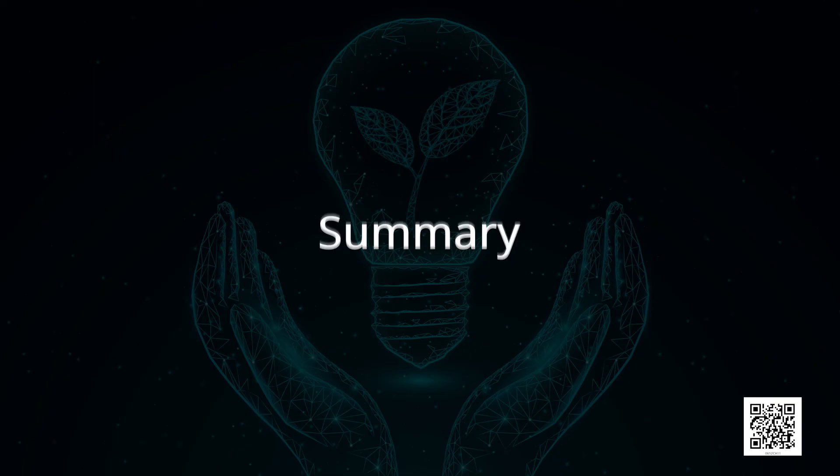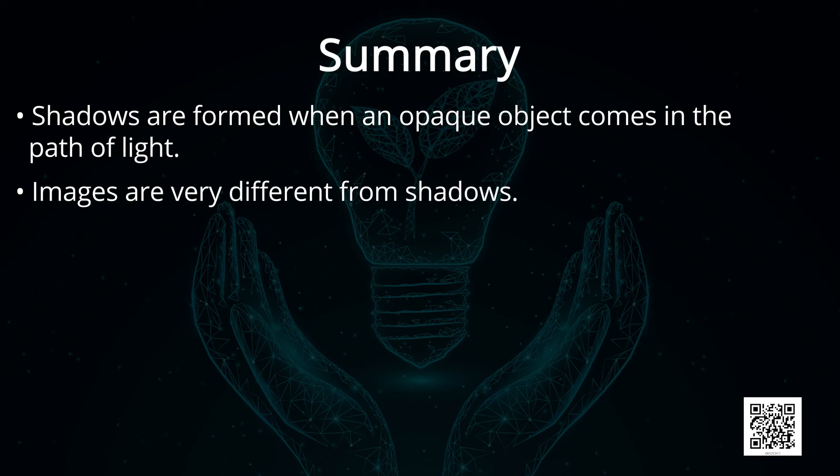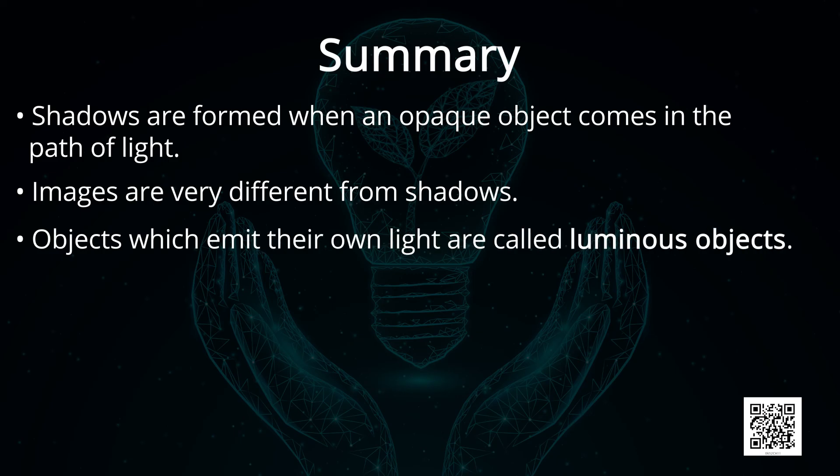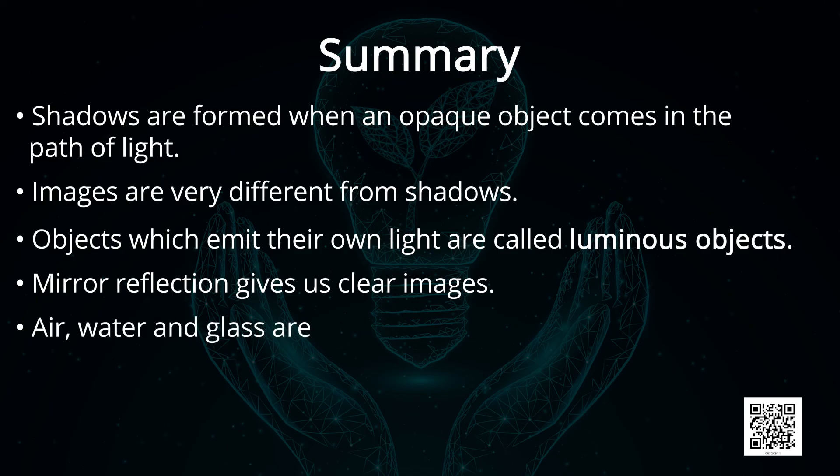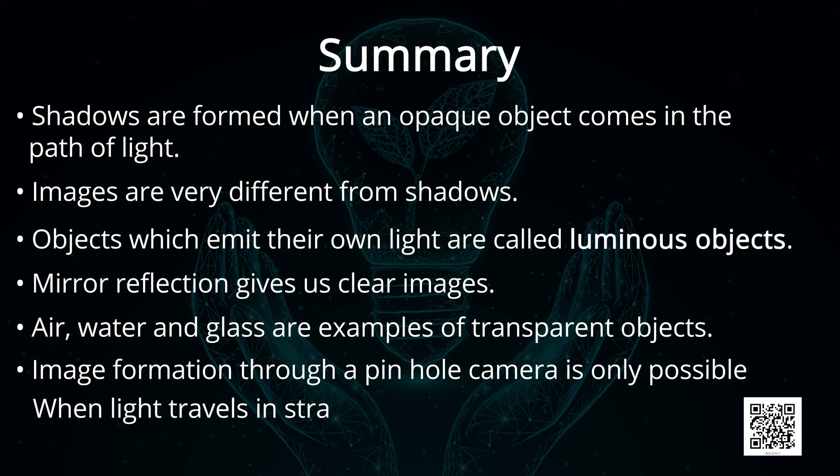Summary. Shadows are formed when an opaque object comes in the path of light. Images are very different from shadows. Objects which emit their own light are called luminous objects. Mirror reflection gives us clear images. Air, water and glass are examples of transparent objects. Image formation through a pin-hole camera is only possible when light travels in straight line.